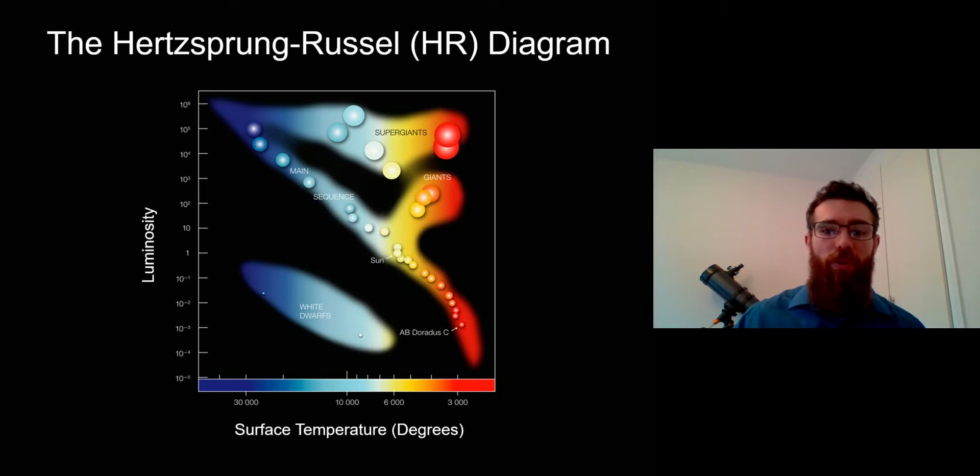Some of you may be familiar with what this diagram is, and if you're not, all of the observations of stars have been made. If you plot them on a graph like this with luminosity on the y-axis and surface temperature on the x-axis, you get this kind of structure and certain groups of stars.